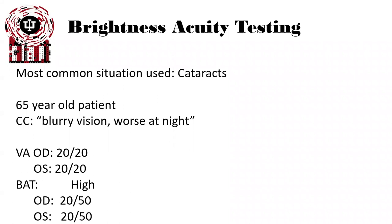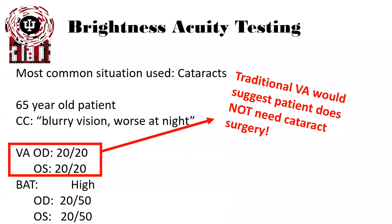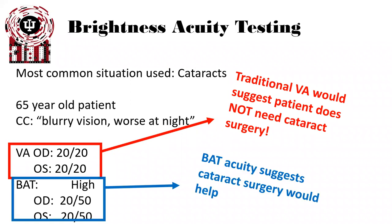Here's an example of a common situation where we would use a BAT. A 65-year-old patient comes in with a complaint of blurry vision worse at night, but sees 20/20 in both eyes fully corrected — suggesting they do not need cataract surgery. However, when we do BAT testing on high illumination, their visual acuity drops to 20/50 in both eyes. This is typically below the legal level to drive in many states, and cuts off the threshold for reading newspapers and books. This patient may have a real impact on their daily life and actually need cataract surgery.